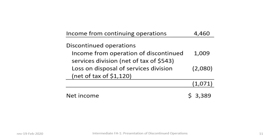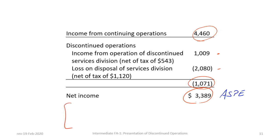Here is the completed discontinued operations section followed by the final income amount. Recalling from Tutorial 1, the income from continuing operations was $4,460,000. The discontinued operations resulted in a net loss of $1,071,000, comprised of positive income from operating the operation less the loss on disposition. So net income is $3,389,000. The ASPE version of the statement would stop here, and if we had other comprehensive income, the OCI would appear here in an IFRS statement.